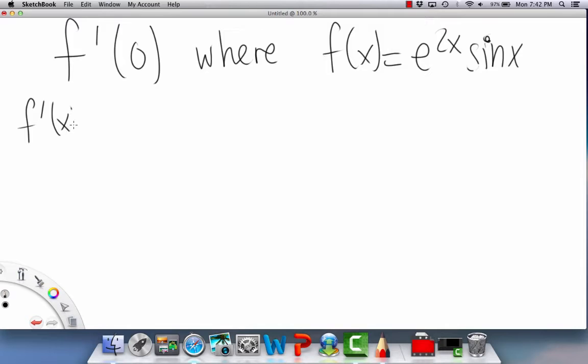So, f prime of x is going to equal, and here we have to implement the product rule. So, we'll do derivative of the first. So, derivative of the first would be e to the 2x. And then, don't forget the chain rule. So, then we have times 2. Right? And then, the second term stays the same. So, then we just have our normal sine x. Okay? Plus, and then now we keep the first the same. e to the 2x times derivative of sine x, which is cosine x. Okay?